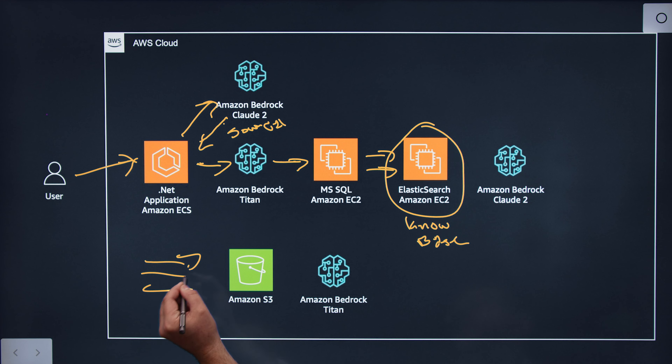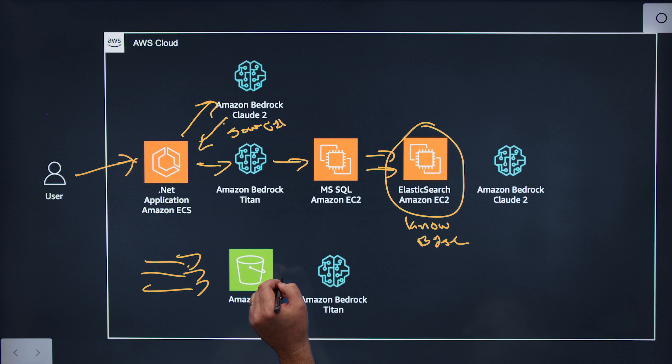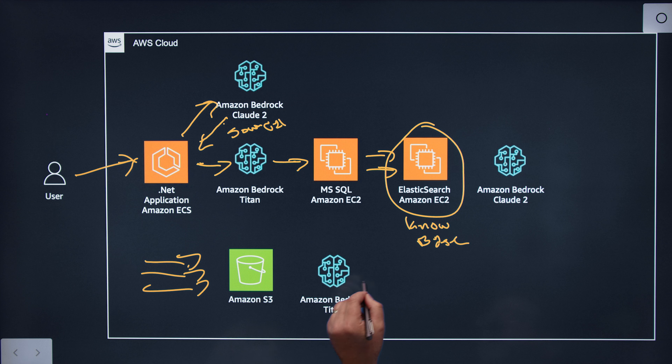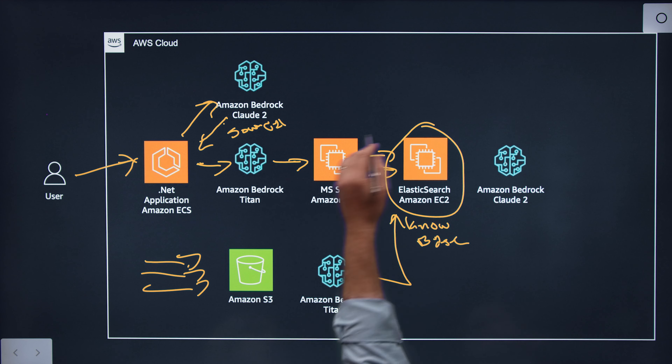How do you update that with new job postings that are coming on the market? Every six hours we have a process that's running offline and it's grabbing all of our RSS feeds, all of our APIs, and all of our jobs from partners and other sites. We pull those into an Amazon S3 bucket where we have a document store. Then we pass those through Bedrock where we vectorize the content base, and that content base is stored in ElasticSearch. So vectorize and then store it — and you do this every six hours, so that contains relevant job postings.